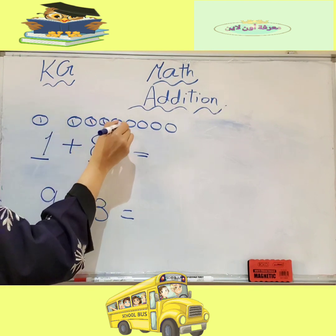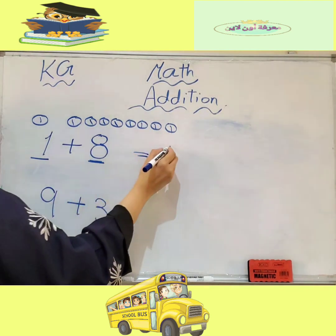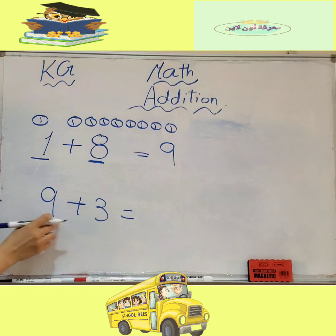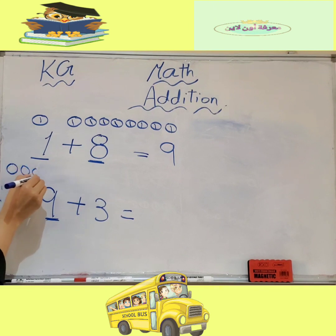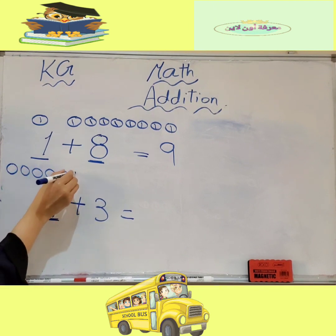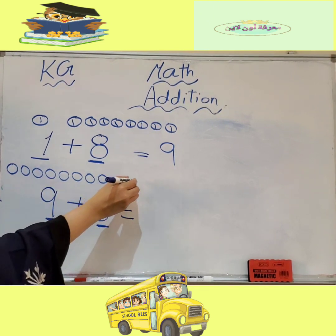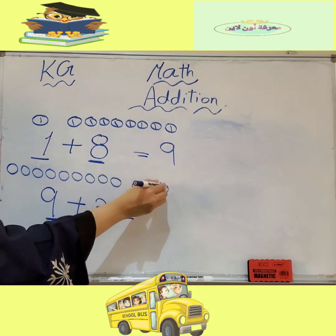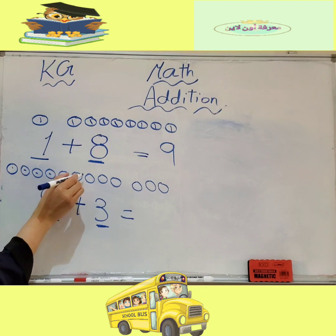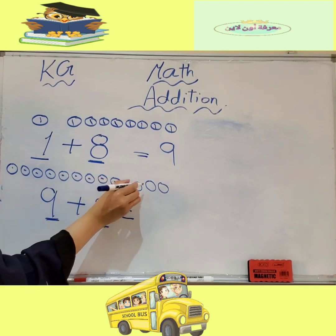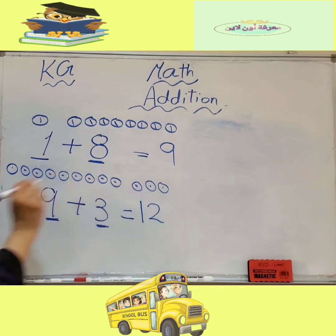Four, five, six, seven, eight, nine. Excellent! One plus eight equals nine. Nine plus three — we will draw nine circles: one, two, three, four, five, six, seven, eight, nine, and here we will draw three circles: one, two, three. Let's take the sum: one, two, three, four, five, six, seven, eight, nine, ten, eleven, twelve. Nine plus three equals twelve.